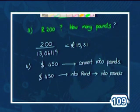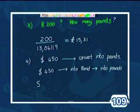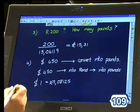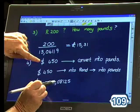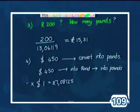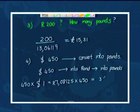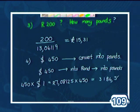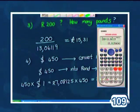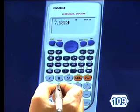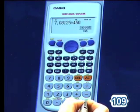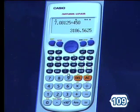Our conversion was that $1 was equal to 7.08125 rand. Since we have $450, we multiply both sides by 450. Going to the calculator, we take 7.08125 and multiply by 450, giving us 3,186.5625 rand.